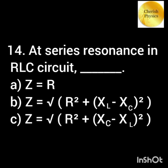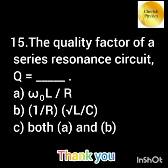At resonance in a series RLC circuit, the impedance Z equals — dash. The quality factor of a series resonance circuit Q equals — dash.